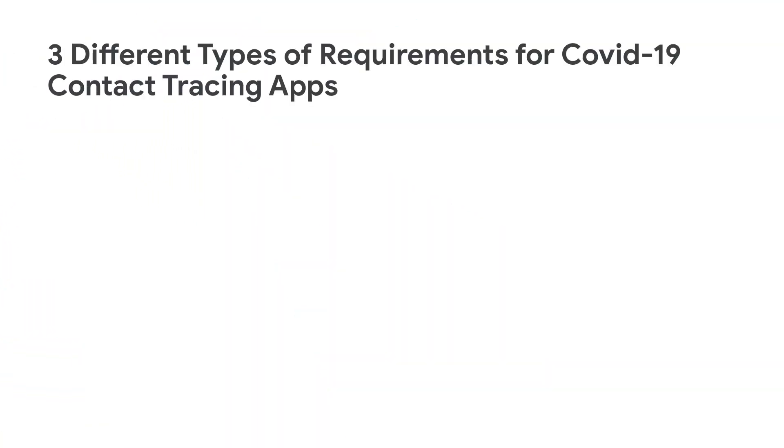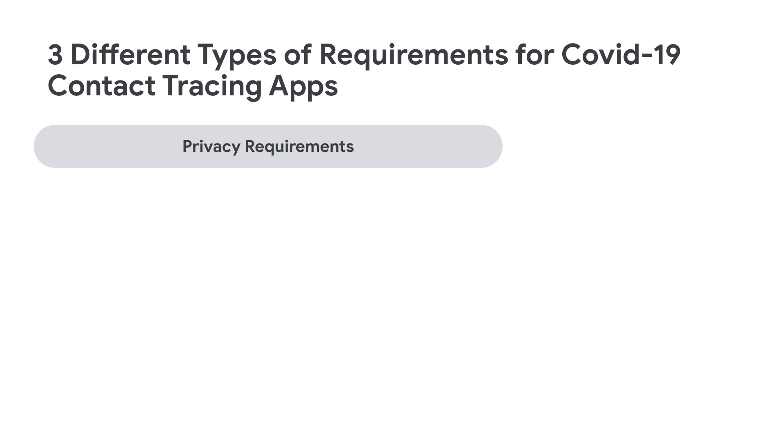As you can see, we put stricter restrictions on these type of apps that must require sensitive user data to perform their core functionalities, because we treat protecting user data and privacy with the highest priority. With that, let's move on to the requirements for COVID-19 contact tracing apps. There are three different types of requirements for COVID-19 contact tracing apps, and these can be broken down into two different areas: one with privacy requirements and another with app visibility requirements.